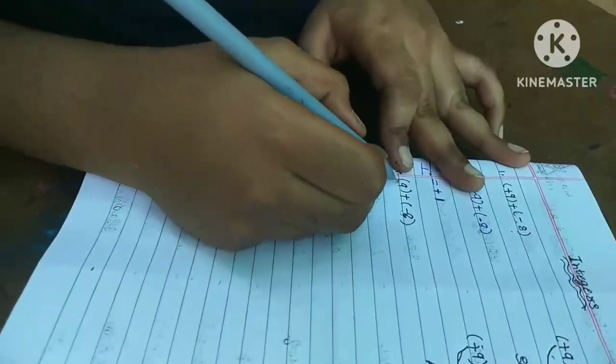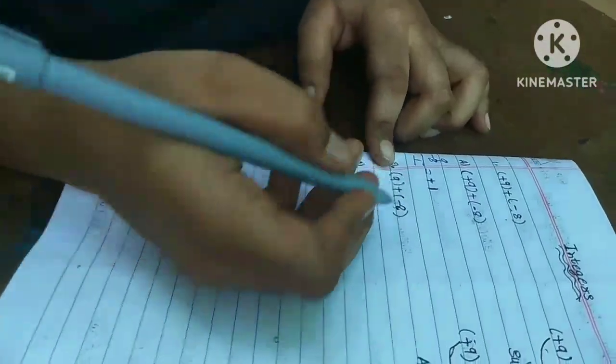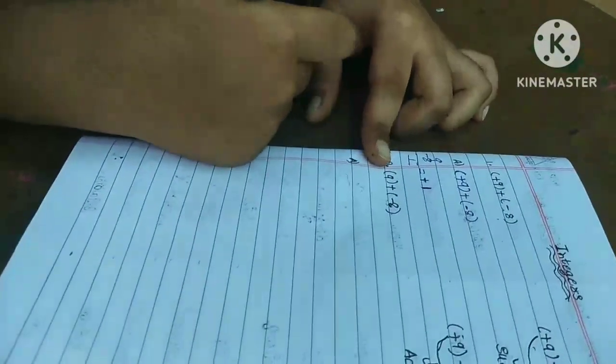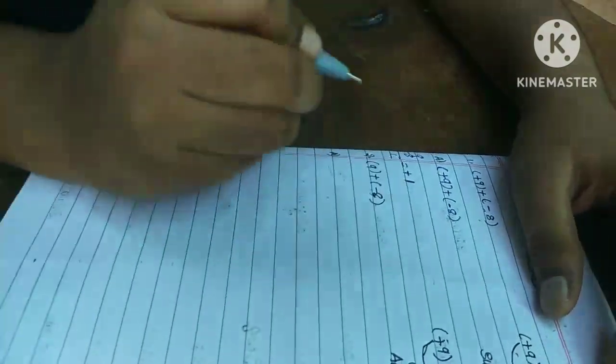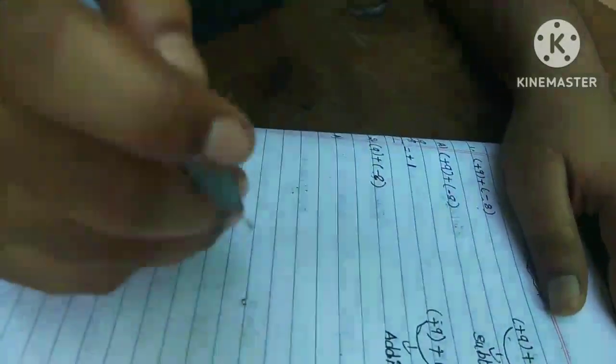For this one, see. For one number not there sign and another number have sign. Means now, any number not have sign means we should do only addition.